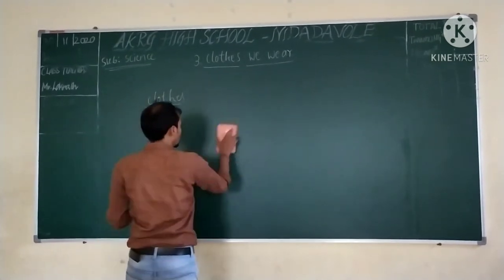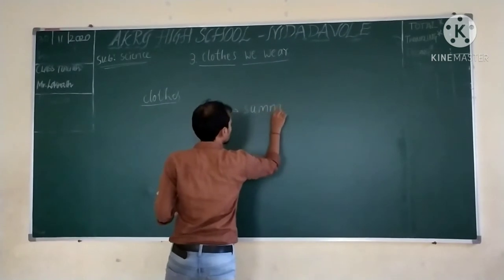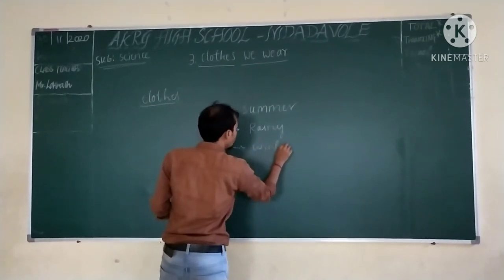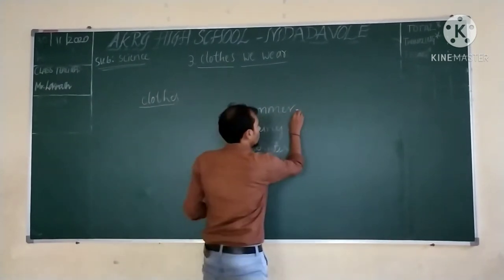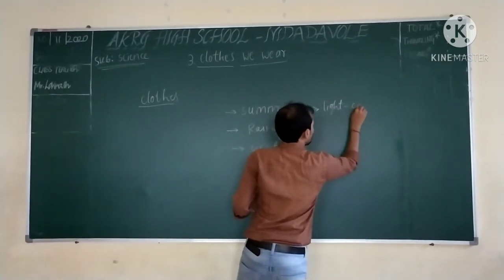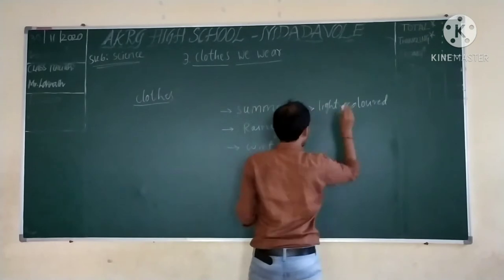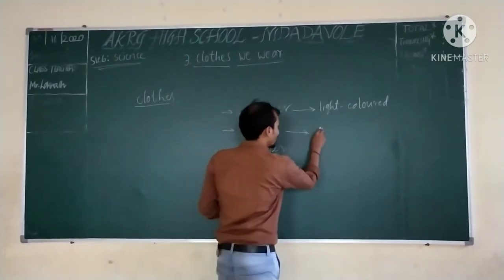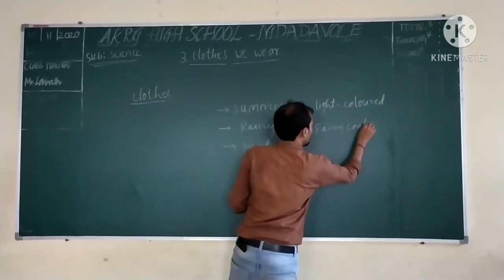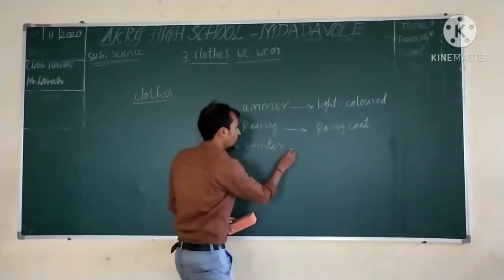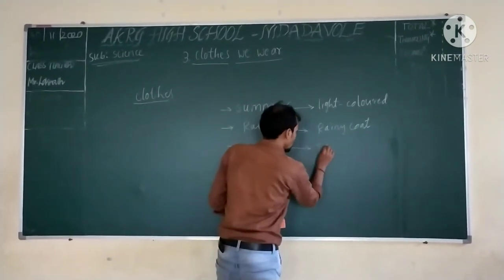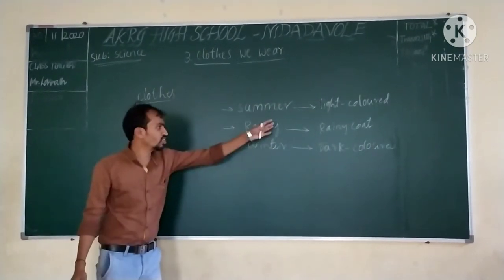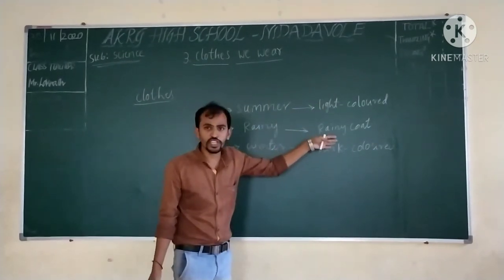Before that, let us see what are the different seasons that we have. We have three seasons: one is summer season, then rainy season, and then winter season. Preferably, during summer we will be wearing light colored clothes. But when it comes to rainy season, what clothes do we wear? We will be using a raincoat. And coming to winter, what clothes do we wear? We will be wearing dark colored clothes.